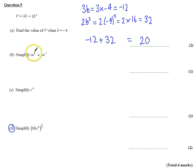Simplify m to the power of 6 times m to the power of 7. Well, that's just m to the power of 6 add 7, so it's just m to the power of 13.